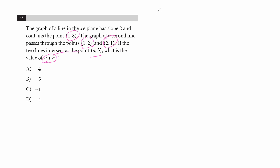The general formula for a line is y = kx + c, where k is the slope — it shows the degree of angle of the line. x is the x-axis coordinate, y is the y-axis coordinate, and c is a constant number.